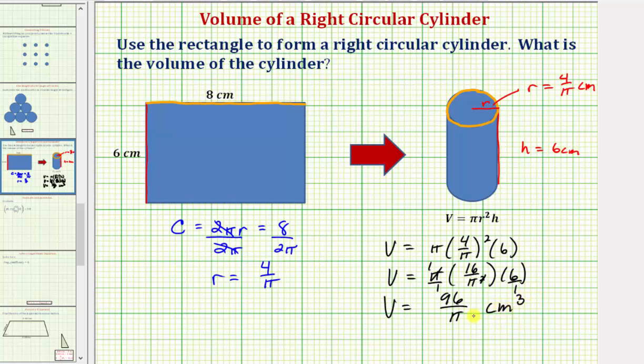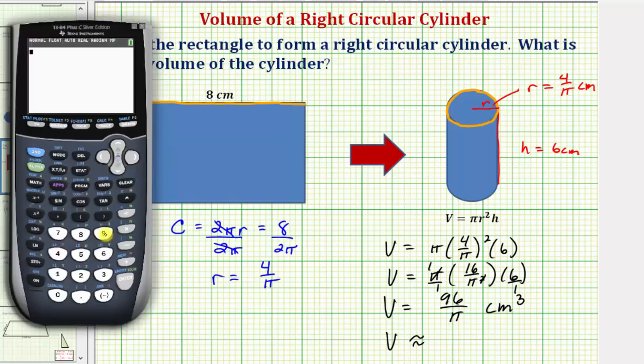Now let's also get a decimal approximation for the volume. To do this we'd have to find the quotient. So using the calculator we'd have ninety-six divided by π.